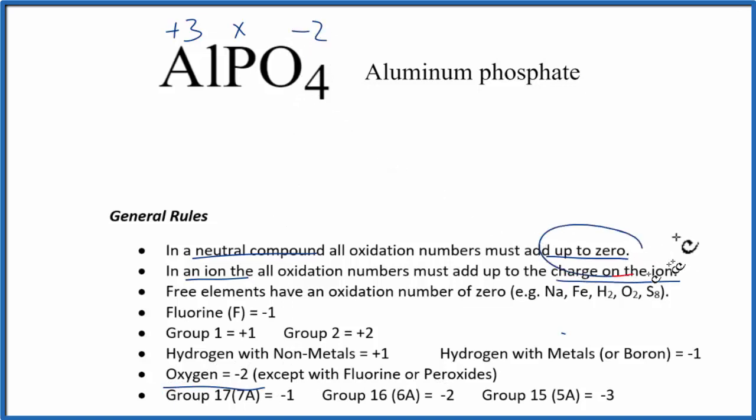So now, since everything's going to add up to zero, we just need to set up an equation and do a little math. Now, we have 1 aluminum, and each aluminum is plus 3. We have 1 phosphorus, but we don't know what that is. We're going to call it X. Plus, we have 4 oxygen atoms, and each one is minus 2. So we'll put minus 2 there.